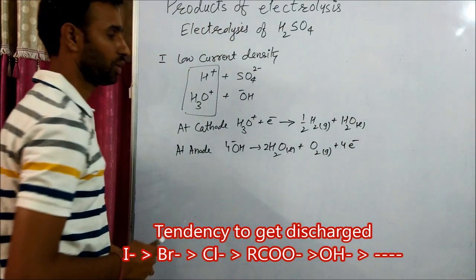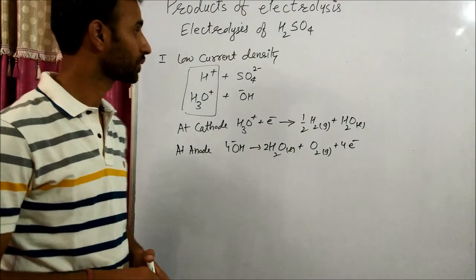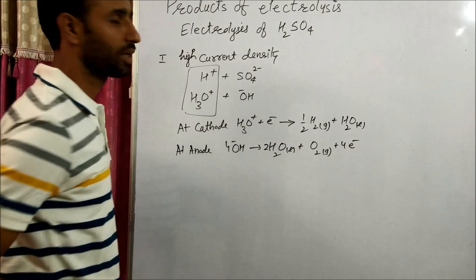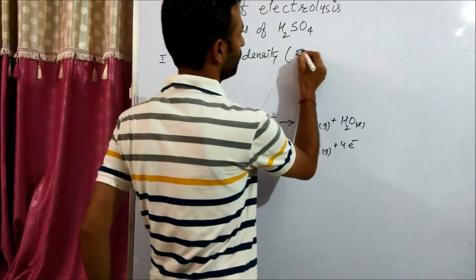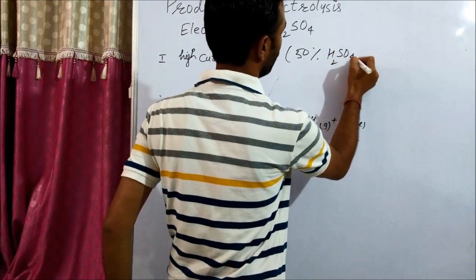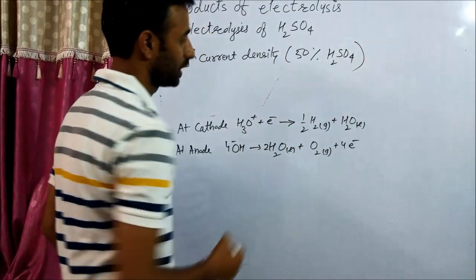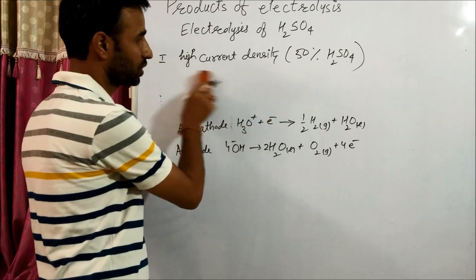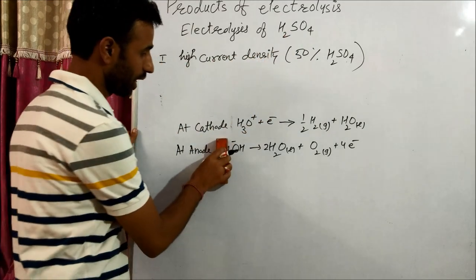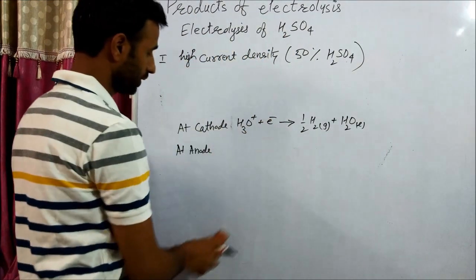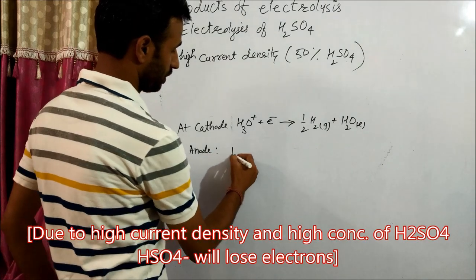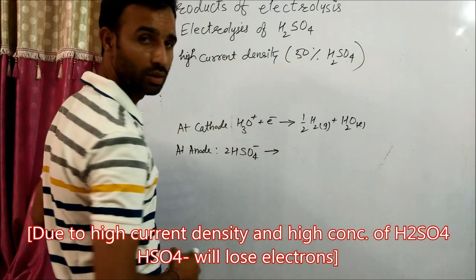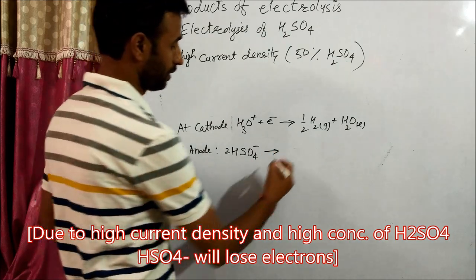Now when current density is high, high current density at 50% H2SO4. In this case at cathode reaction remains same. But at anode, HSO4- ion loses electron to give H2S2O8 plus 2 electrons.